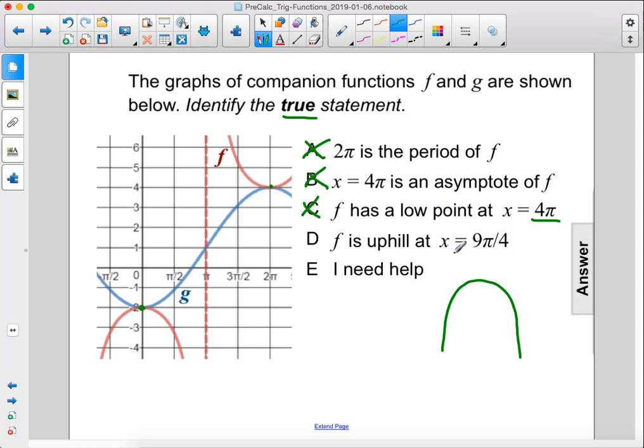f is uphill at x equals 9π over 4. 9π over 4 is just past 8π over 4, which is 2π. So just past, and looking at f, it is uphill. So this is true. The answer is D.